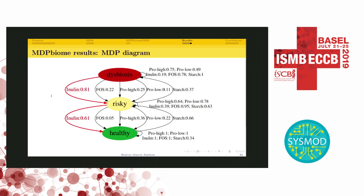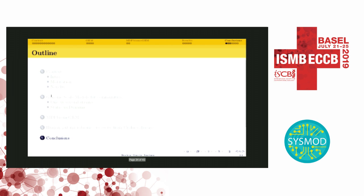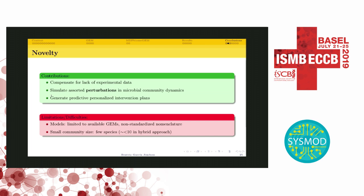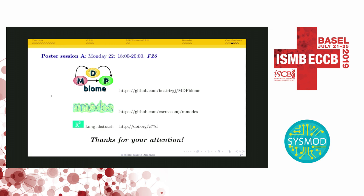This recommendation agrees with the literature because inulin intake promotes butyrate production to reach bowel homeostasis. In conclusion, with NDP Biome GEM we compensate for the lack of experimental data about microbiome time series by simulating perturbations and generating predictive personalized intervention plans. The limitations of our system are that we use available genome-scale metabolic models with the problem of non-standardized nomenclature, and models following the dynamic hybrid approach are typically applied to communities of small size. Thank you for your attention. If you have questions or want to discuss in detail, I have a poster this evening, number F286.